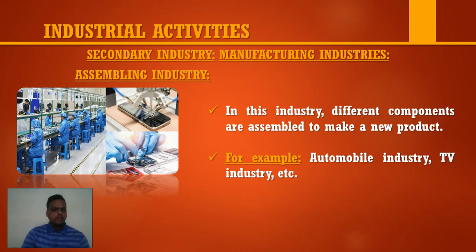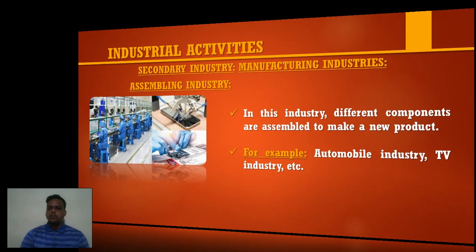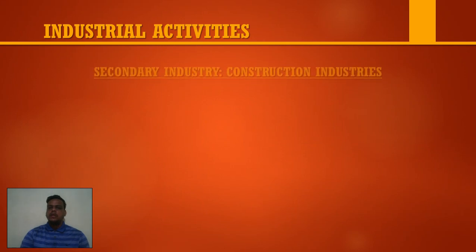Examples of assembling industry include automobile industry, television industry, and electronics. So we have seen four points — four different types — but they all belong to one particular industry: manufacturing industry.